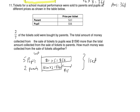The sale of tickets to pupils was $1,590 more than to parents. Jinkai said $1,590 divided by $15 to find the number of sets. Aisha explained it's to find the number of sets. So $1,590 divided by $15 equals 106. We have 106 sets.